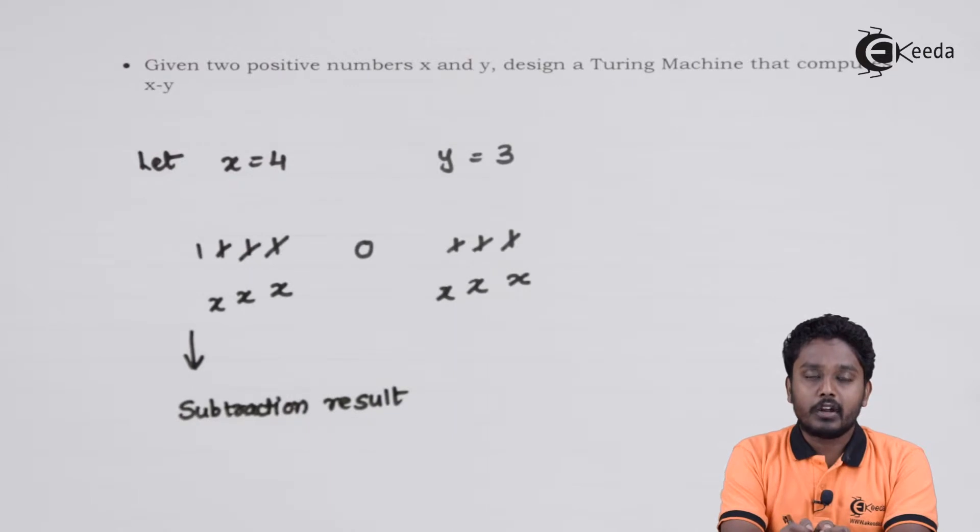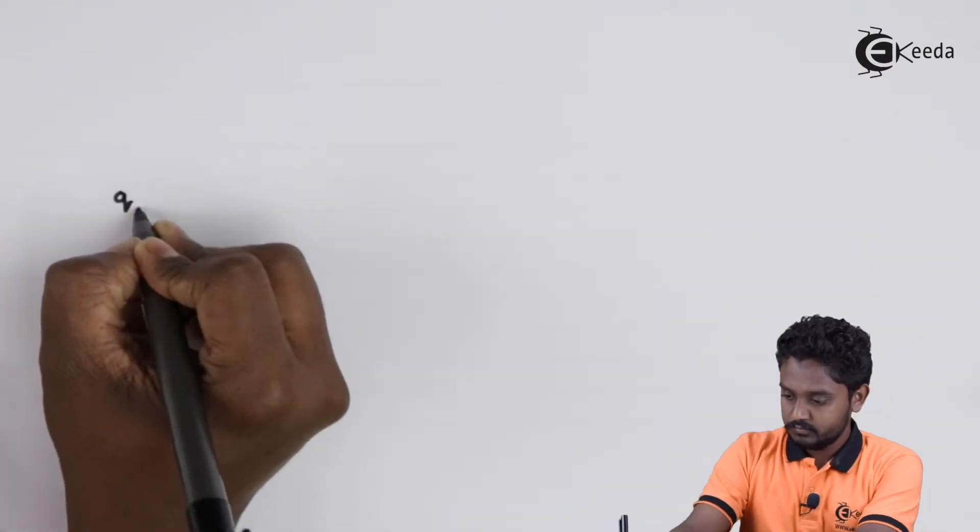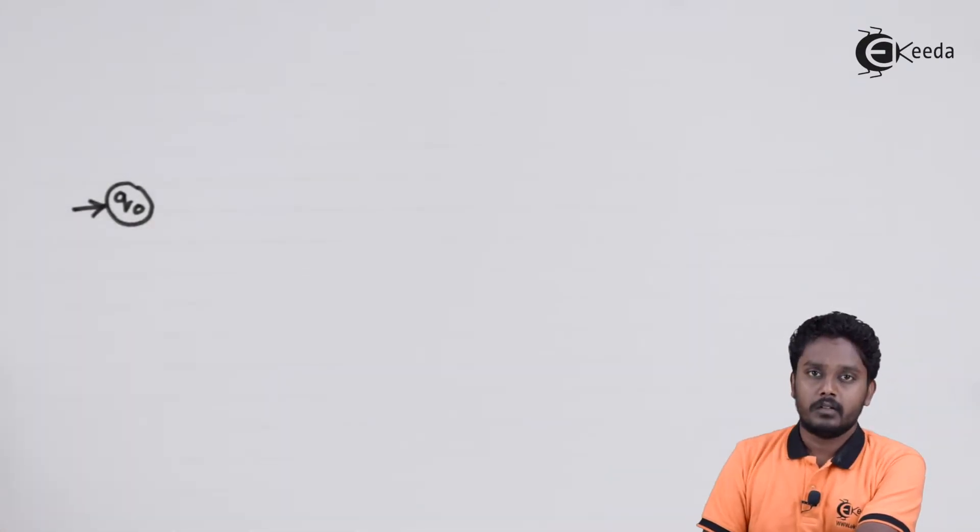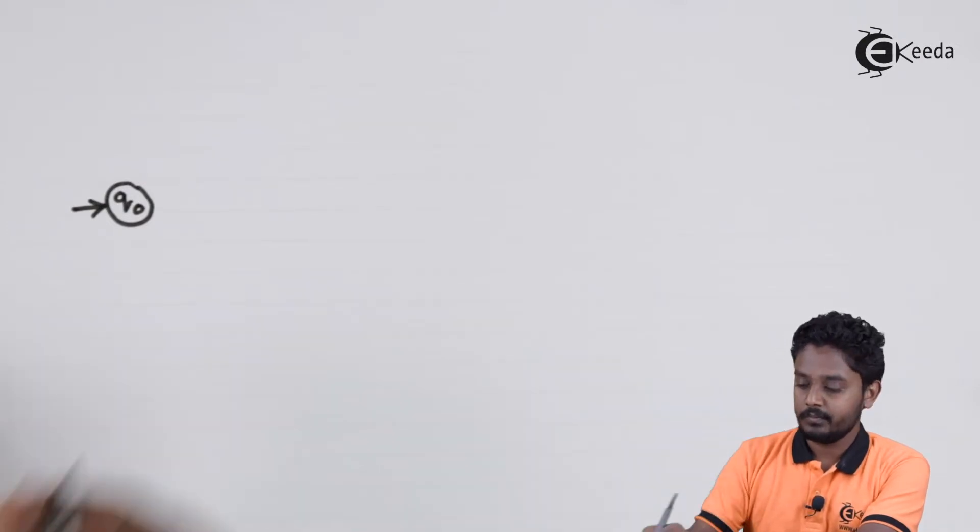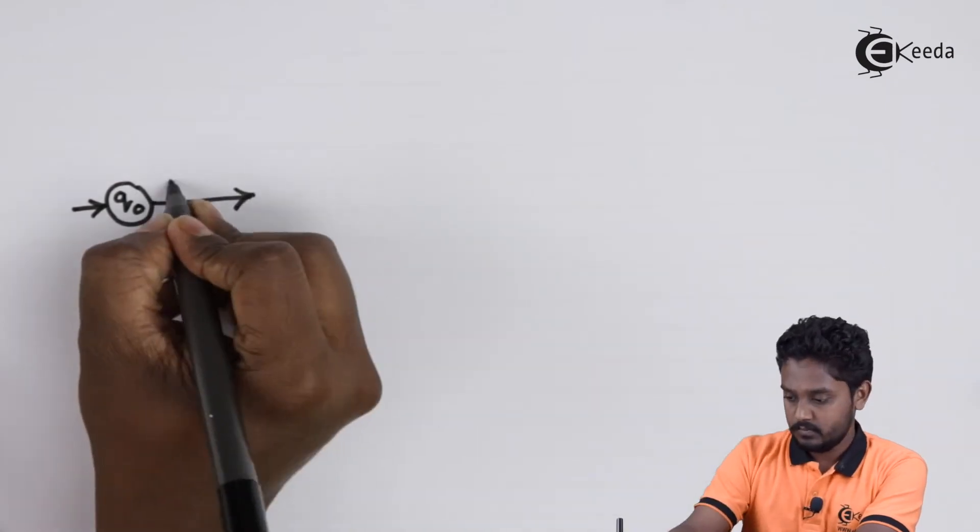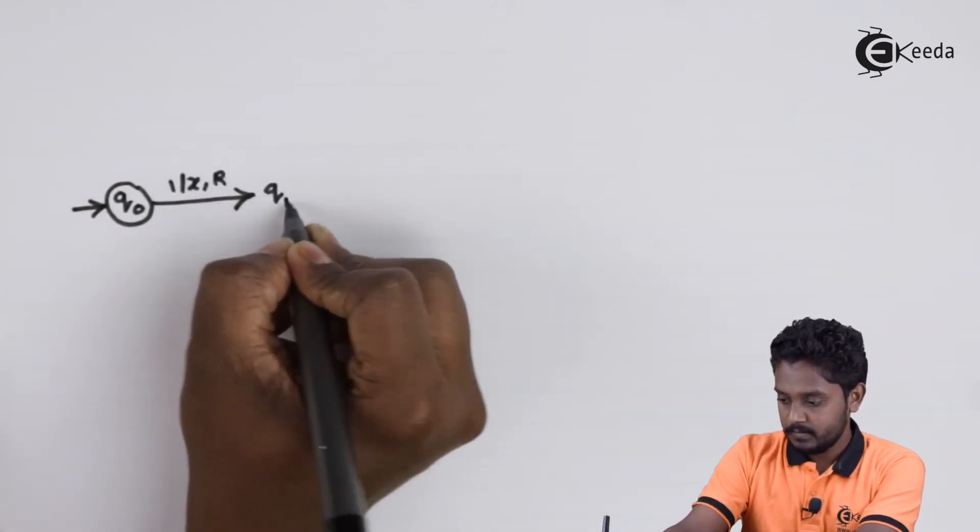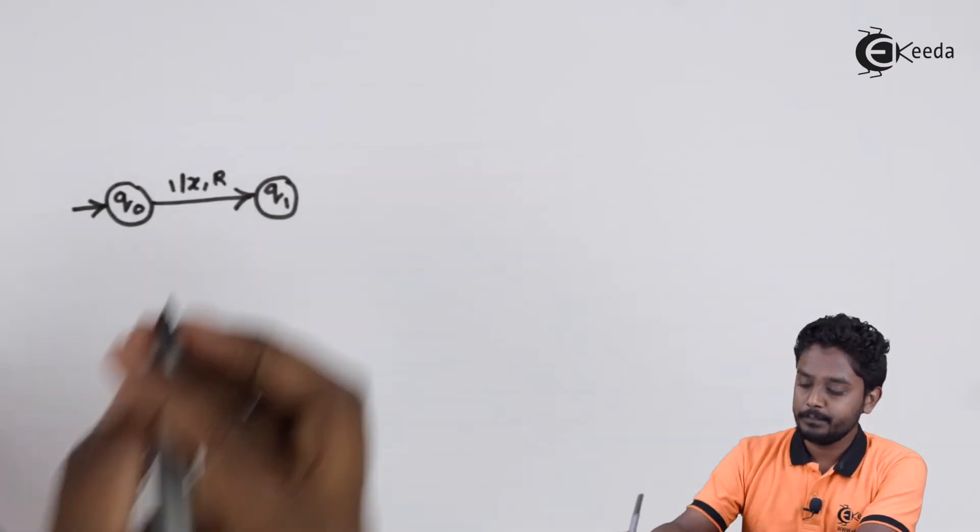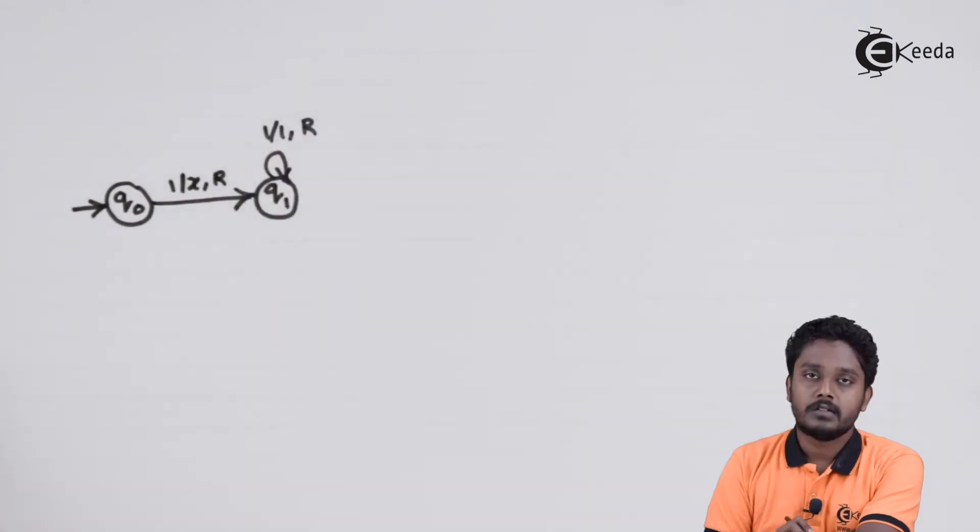Now, let's try to emulate this in a machine. Taking q0 as the initial state. With the first 1, I will replace it with x and move to the next state and keep on moving to the right. After the first replacement, all the 1's are skipped till we reach the second number.